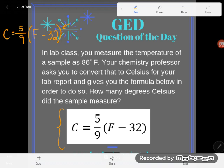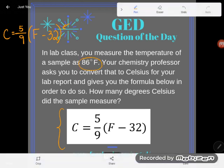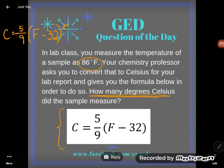Now go looking through your problem for what you know. Do I have any known values? Let's take a look. It says in lab class you measure the temperature of a sample as 86 degrees Fahrenheit. I have a known value. I have the Fahrenheit temperature. And what is this problem asking me to find? It's asking me to find how many degrees Celsius.